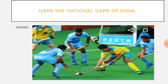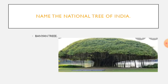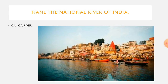Name the national game of India. It's hockey. Hockey is the national game of our country. Name the national tree of India. It's banyan tree. Banyan tree is the national tree of our country. Name the national river of India. It's Ganga river. Ganga river is the national river of our country.